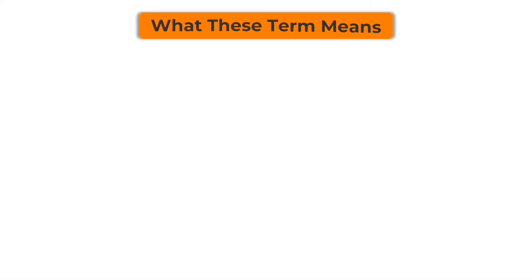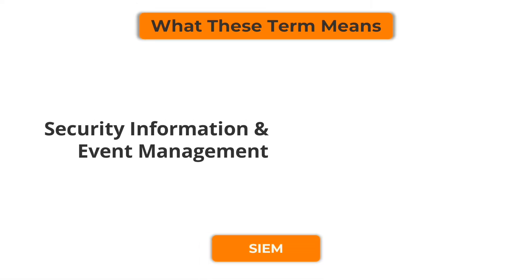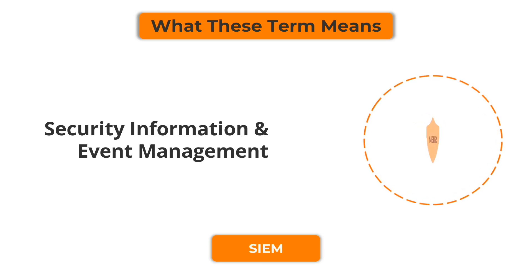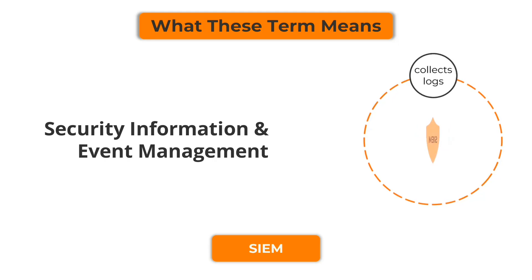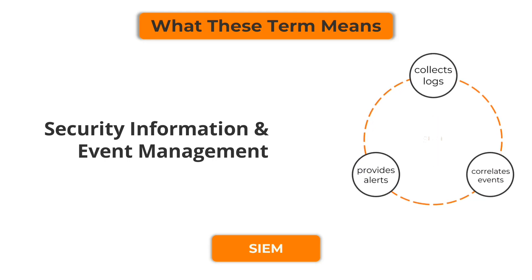First, let's understand what these terms mean. SIEM — Security Information and Event Management. SIEM is like a central hub for gathering and analyzing security data from across your organization. It collects logs, correlates events, and provides alerts for anything suspicious.